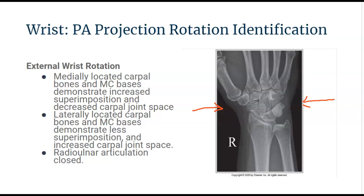When there is external wrist rotation, the medially located carpal bones and the metacarpal bases demonstrate increased superimposition and decreased carpal joint space visualization.